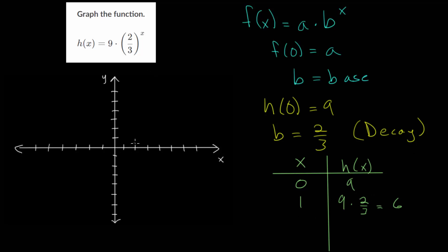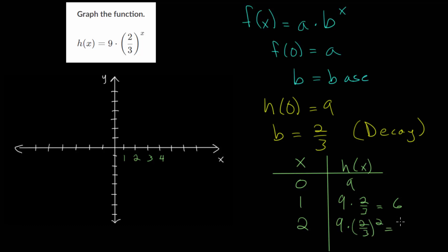From one x value to the next, increasing x by 1, we multiply our y values by 2/3 since that's our base. For x = 2, multiply the previous value by 2/3, or equivalently take the starting value 9 and multiply by (2/3)^2 = 4/9. So 9 · (4/9) = 4.